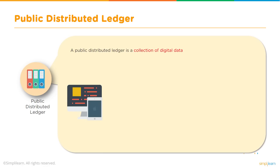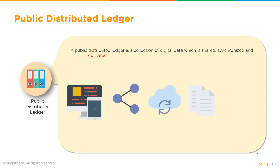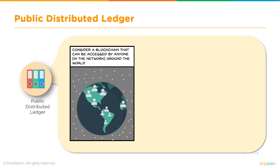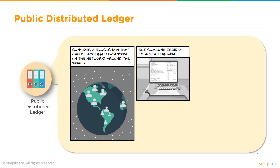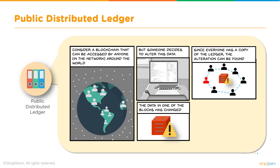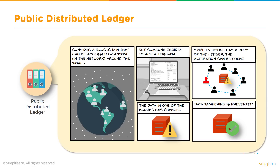What is a public distributed ledger? A public distributed ledger is a collection of digital data which is shared and available to all participants on the network. It is synchronized — everyone has the same copy of data. It is a replicated shared ledger across the world, across multiple sites, across boundaries, countries, and institutions. If someone decides to alter the data and change one of the blocks, every participant on the network has a copy of the ledger, making it very easy to identify the altered block and discard it. This is how data tampering can be prevented.